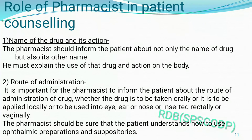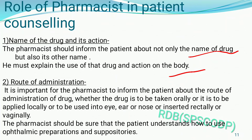The first point in patient counseling aspects is the name of drug and its action. The pharmacist should inform the patient not only about the name of the drug, but also its other names and synonyms. The pharmacist must explain the use of that drug and its action on the body — why the drug is being given and what it does.